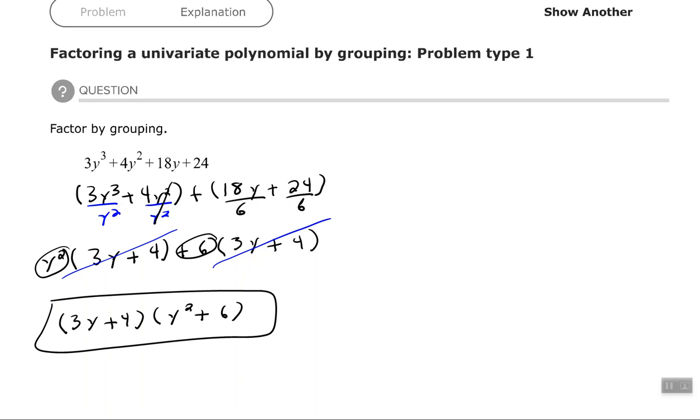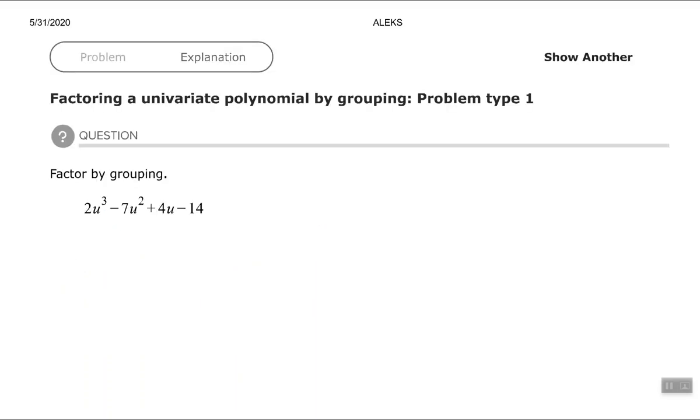All right. Let's try one more of these. So we have 2u³ minus 7u² plus 4u minus 14. So you may want to pause the video here and try this problem yourself and then come back and see if you get it correct.